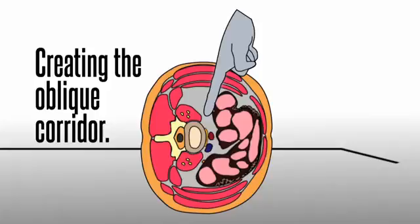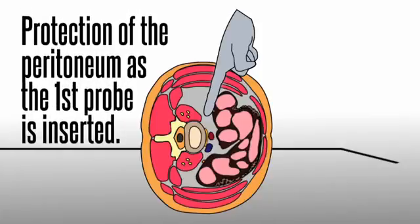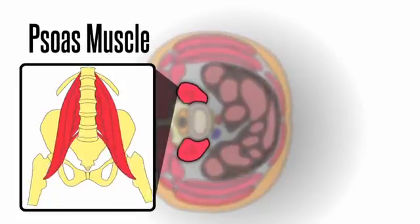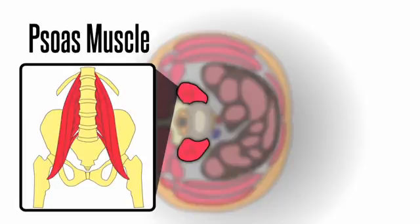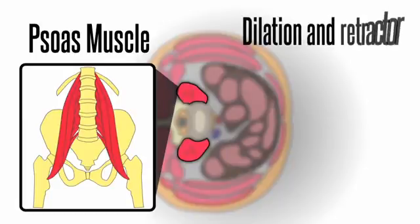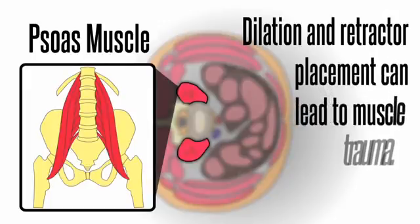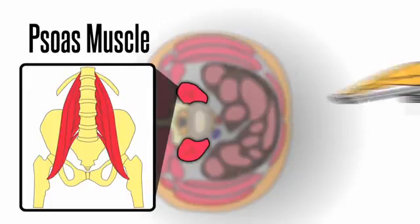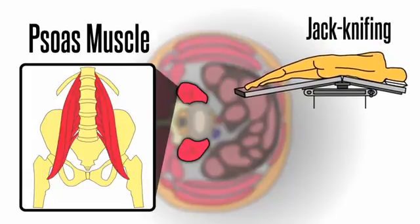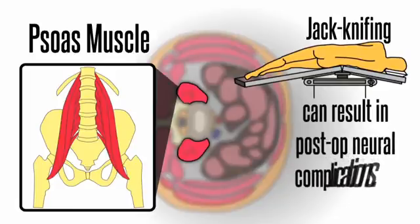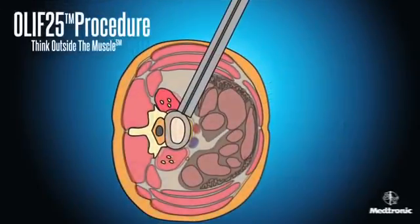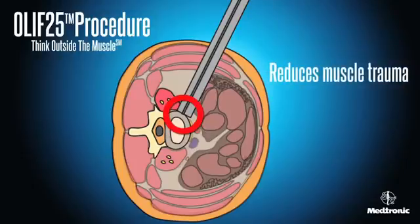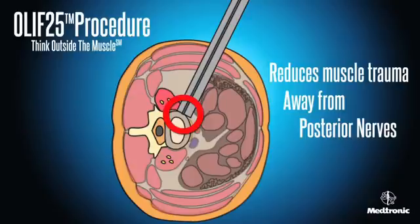The finger or blunt instrument protects the peritoneum as the first probe is inserted. The psoas muscle in the lumbar spine contributes to hip joint flexion and rotation. In traditional trans-psoas approaches, dilation and retractor placement through this muscle can lead to muscle trauma. Stretching of muscle by jackknifing the patient and surgical table and dilating through muscle can result in post-op neural complications. The OLIF-2-5 procedure uses a trajectory outside or within the anterior portion of the psoas, reducing trauma to the muscle and staying away from the posterior nerves.